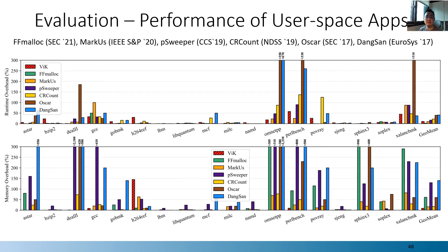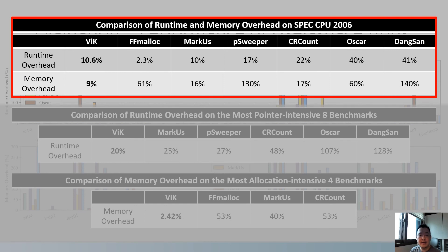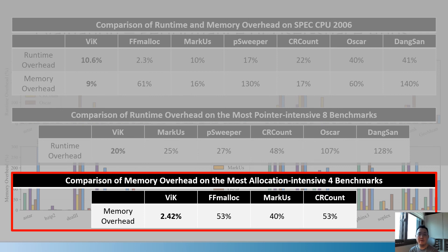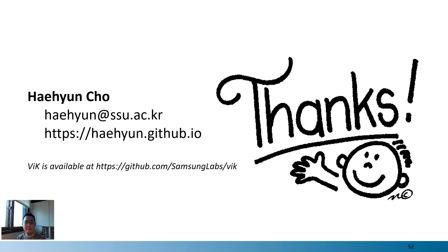We also measured performance of VIG-protected C and C++ programs. VIG has average runtime overhead of around 10% higher than FFMalloc and the same as markers within rounding error, and incurs 9% memory overhead on average — the smallest among any other protections. However, when comparing average runtime overhead on the most pointer-intensive eight benchmarks in terms of memory allocations, VIG incurs average runtime overhead of 20%, which is lower than the others. VIG also incurs much less memory overhead than the others on the most allocation-intensive benchmarks. Thanks for listening, I will be happy to answer any questions.